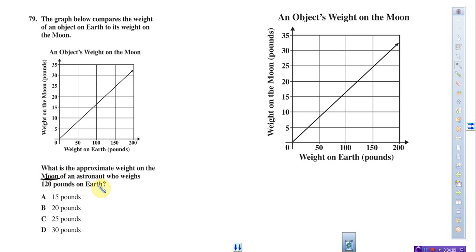We go to our graph. We want the weight at 120, so we go to 120. Someone who weighs 120 on Earth would weigh how much on the Moon? It would be right at that point.